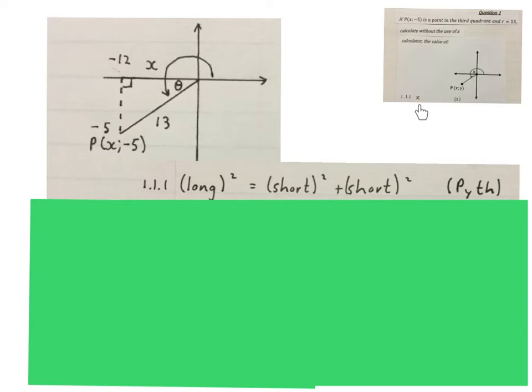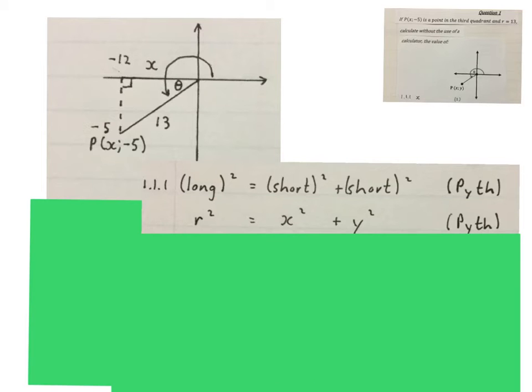The first thing they asked us to work out here was x. In other words, we want to find out how long that line is, what the value of x at this point will be. So what we do is we use Pythagoras. I always use this method where you say long² = short² + short². The official mathematical way of writing it is r² = x² + y².